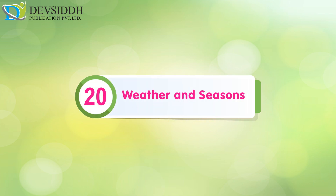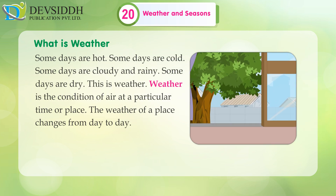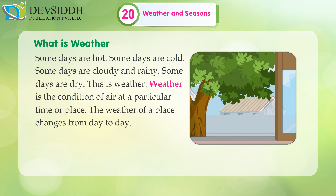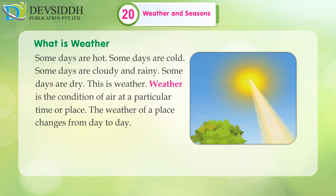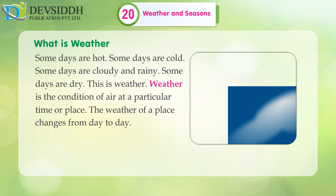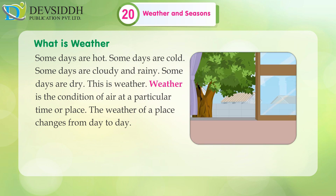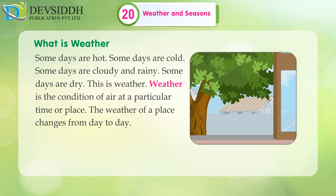Chapter 20: Weather and Seasons. What is weather? Some days are hot. Some days are cold. Some days are cloudy and rainy. Some days are dry. This is weather. Weather is the condition of air at a particular time or place. The weather of a place changes from day to day.